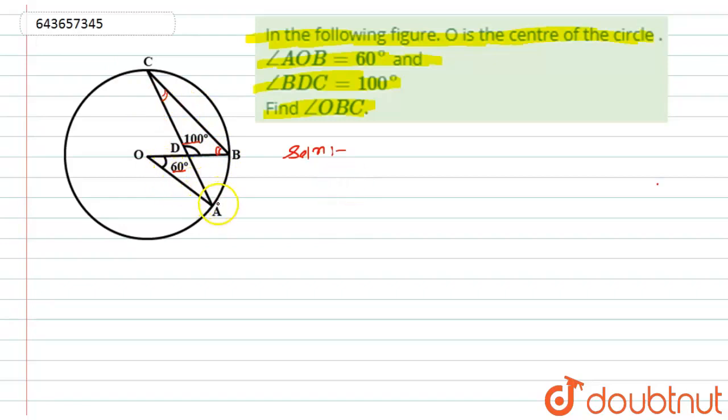If I look at here, this angle AOB is the center angle while this angle ACB is the angle at the circumference. By using the theorem here, I can write the angle AOB will be equal to twice of angle ACB.